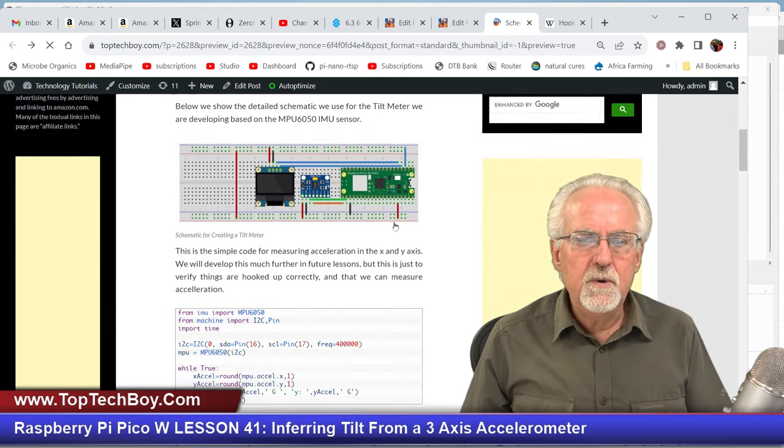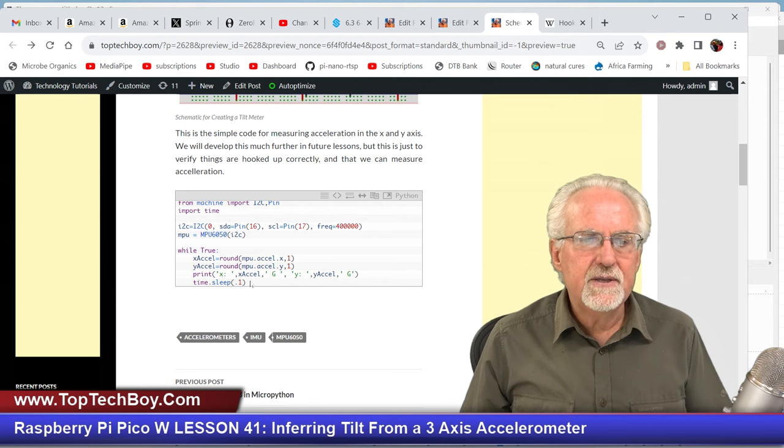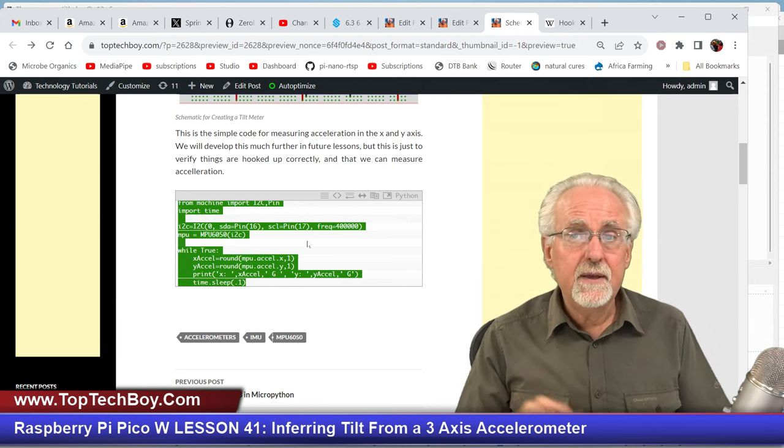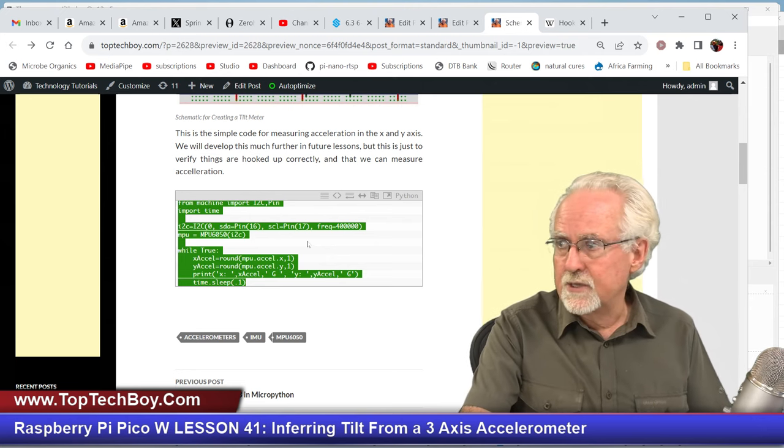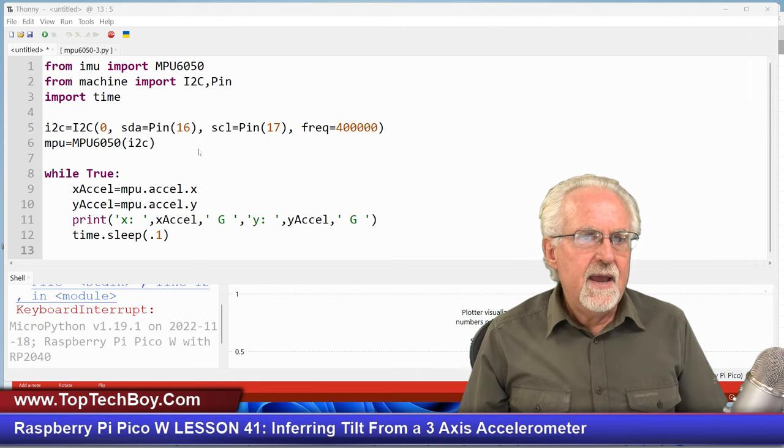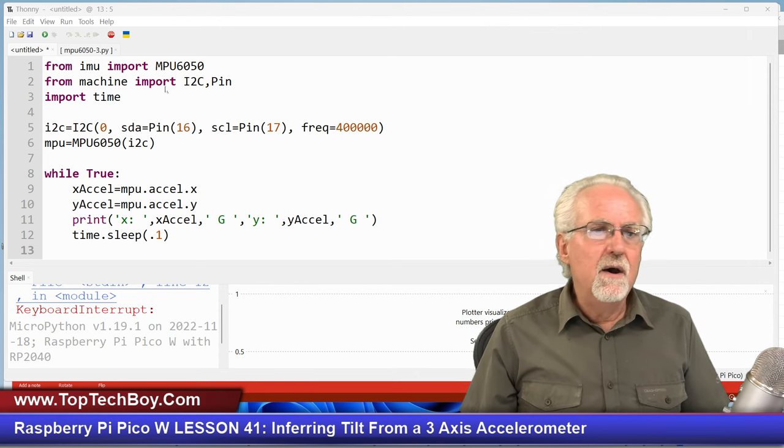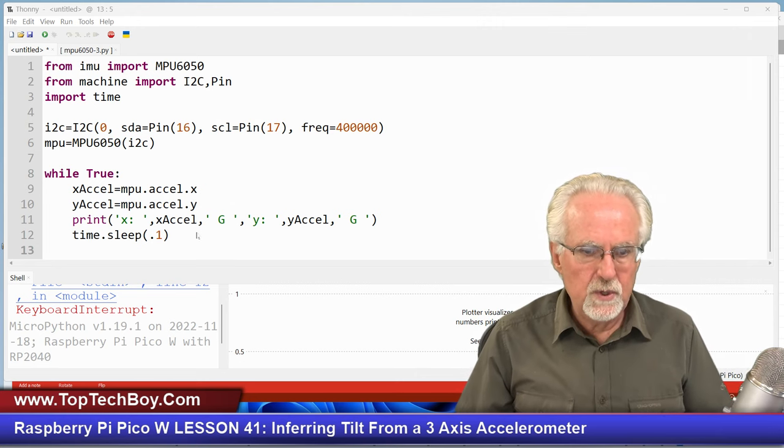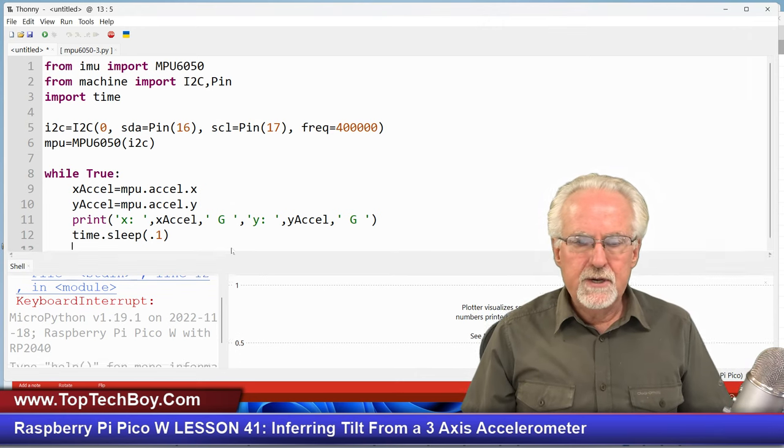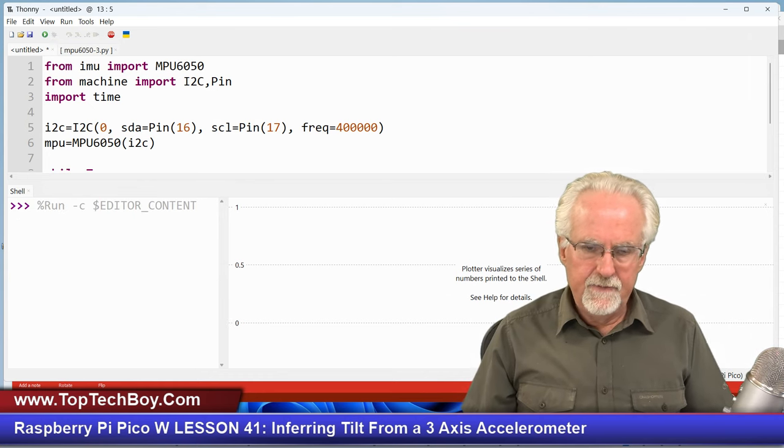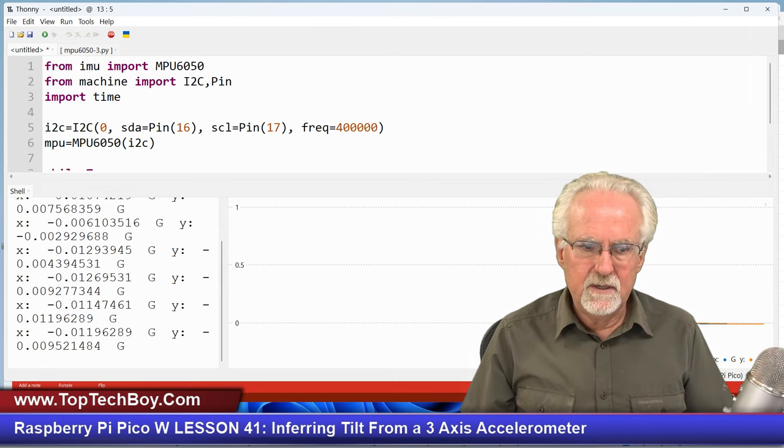I also have the code here that we ended up with last week, so you want to go ahead and grab that. We're starting with the code we had last week. I've gotten that code. This is where we ended up with last week. Just for good measure, to make sure the universe is in proper order, let's run this and see if it does what we expect.